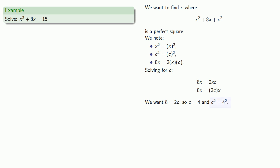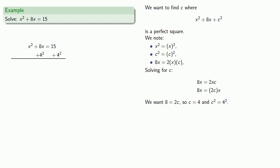Adding 4 squared to x squared plus 8x will give us a perfect square. In math you can get anything you want as long as you pay for it. With an equation, we can do the same thing to both sides. So adding 4 squared to both sides: on the left hand side we get x squared plus 8x plus 4 squared, and on the right hand side we get 31.